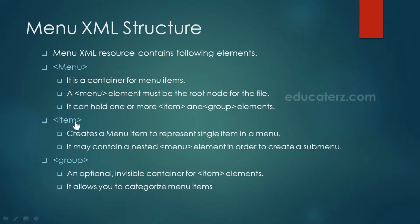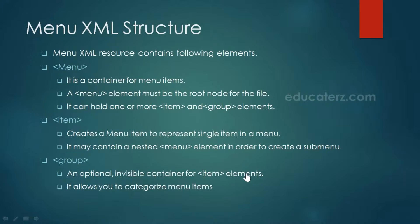The XML menu resource contains the menu element, item, and group. The menu tag is the root element which holds all menu items or groups. The item element creates a menu item representing a single item in the menu, and it may contain a nested menu to create a sub-menu. The group is an invisible container for item elements that allows us to categorize menu items — for example, grouping vegetarian items together and non-vegetarian items together.